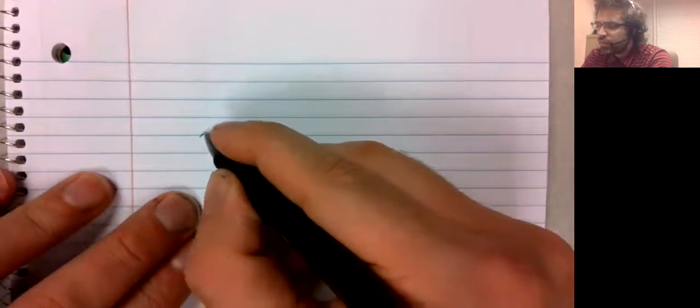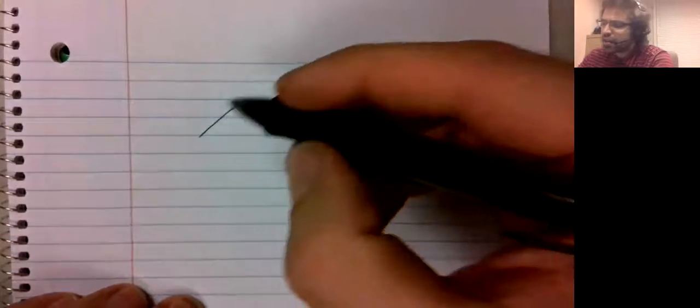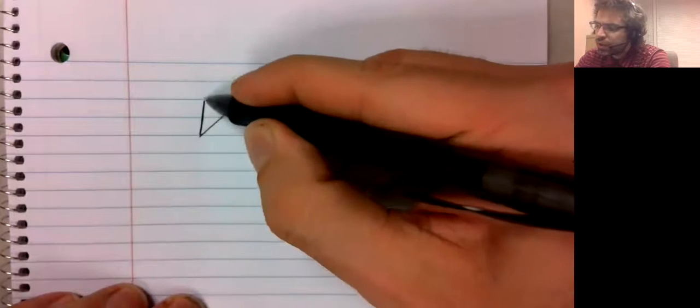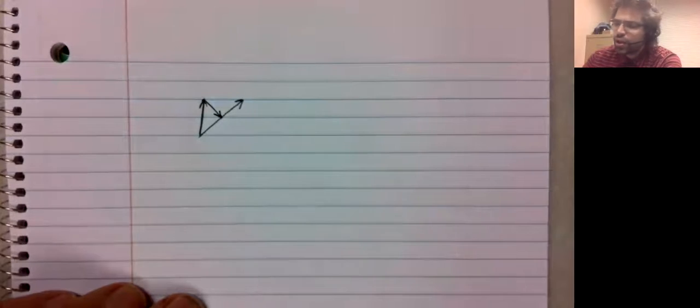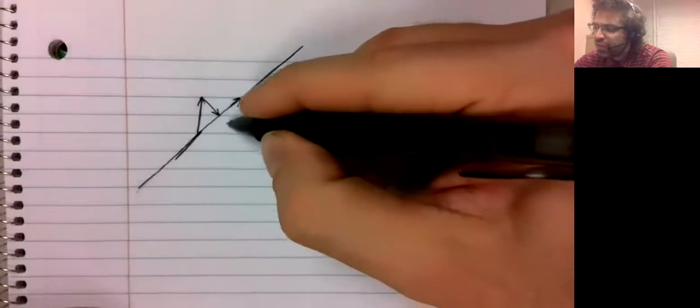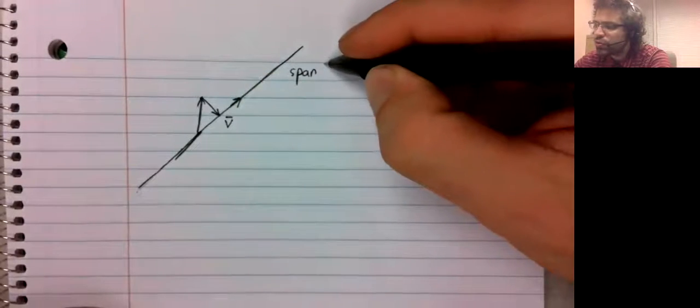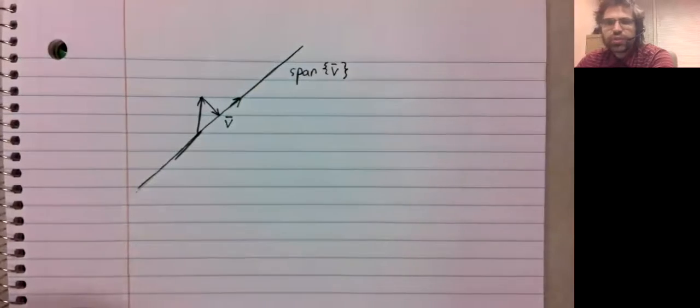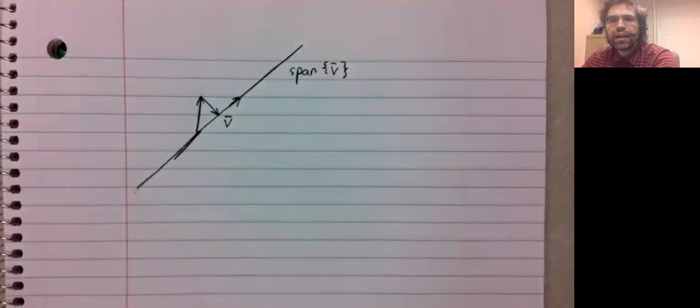We've looked at the situation where we have a vector and we have a second vector, and we project that second vector onto the first. We've also made the observation that instead of thinking of this as projecting onto a vector, we could think of it as projecting onto a subspace. If this vector we're projecting onto is V, we could say that we are projecting onto the span of V.